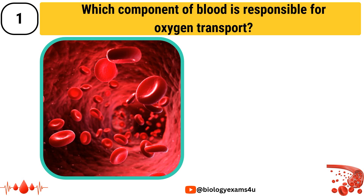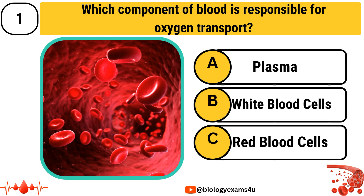Question number 1. Which component of blood is responsible for oxygen transport? The options are Option A: Plasma, Option B: White blood cells, Option C: Red blood cells. Your time starts now.